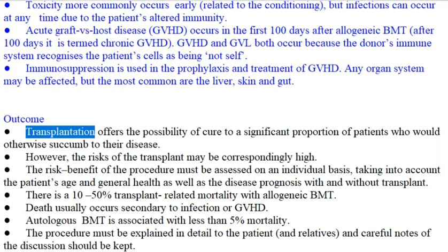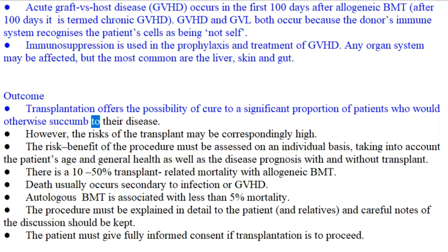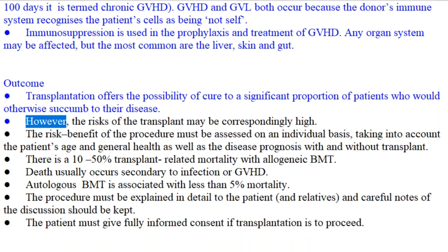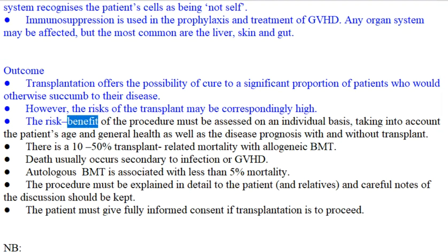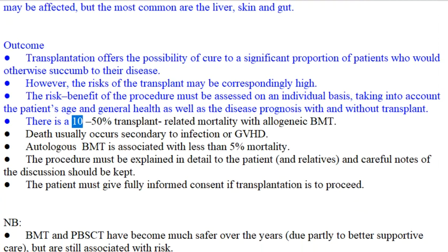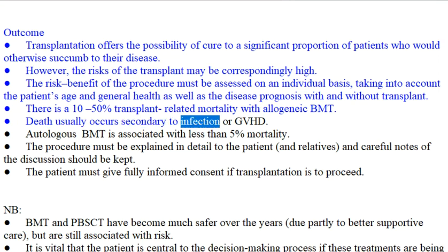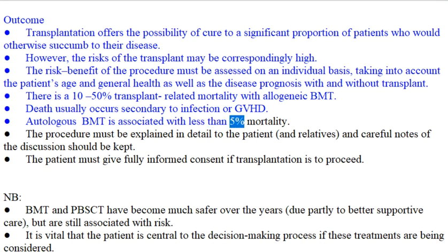Outcome: Transplantation offers the possibility of cure to a significant proportion of patients who would otherwise succumb to their disease. However, the risks of the transplant may be correspondingly high, and the risk-benefit must be assessed on an individual basis, taking into account the patient's age, general health, and disease prognosis with and without transplant. There is a 10–50% transplant-related mortality with allogeneic BMT; death usually occurs secondary to infection or GVHD. Autologous BMT is associated with less than 5% mortality.